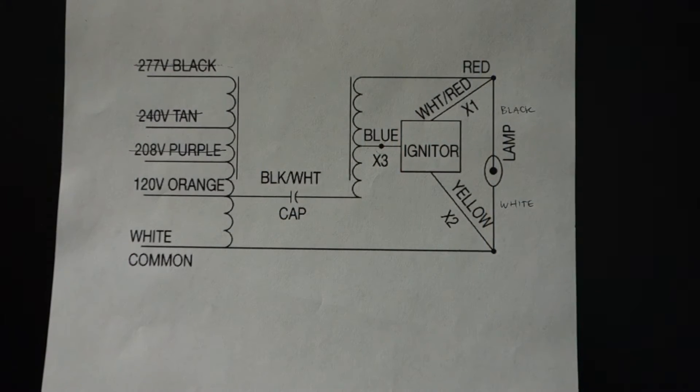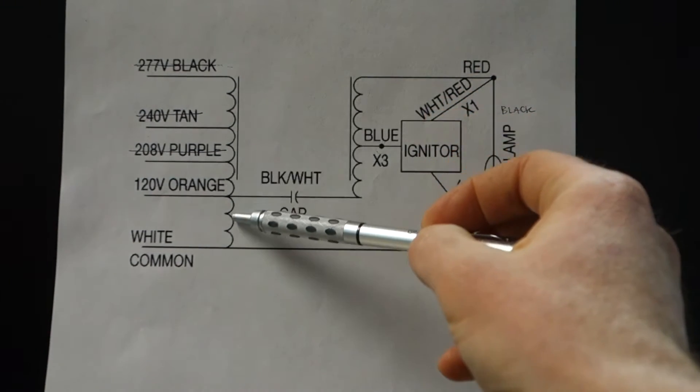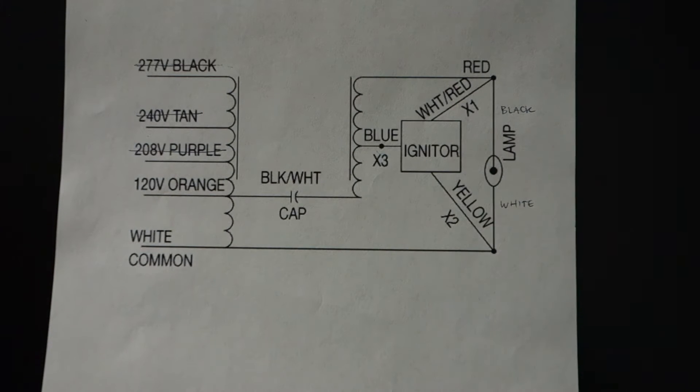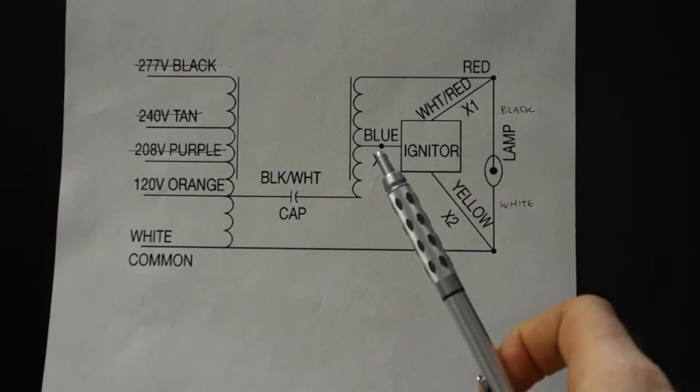Alright, so here's our wiring diagram for the ballast. These lines here and here represent any wires coming directly off of the ballast. There are two sides, so there's one set of wires here and one set of wires here.